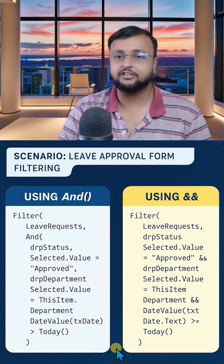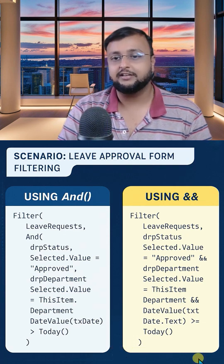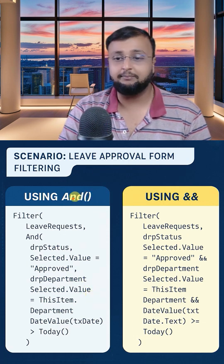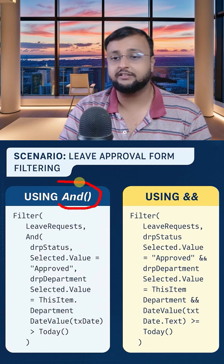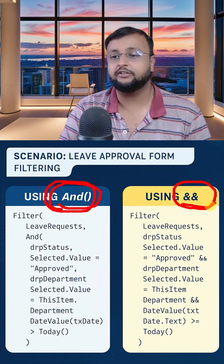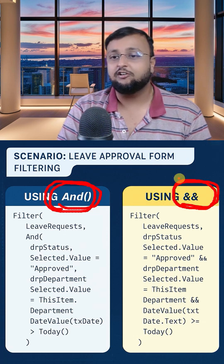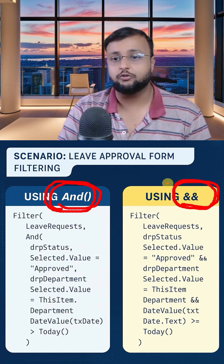In the world of canvas applications, you can write your Power Apps expressions in multiple ways. Sometimes you want to apply the And condition within filter parameters. At that time, sometimes we use the And function and sometimes we use the double ampersand (&&) as a shorthand operator. So what is the difference between those two?